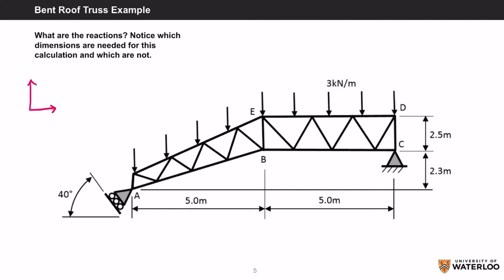We should start by drawing our coordinate system and then draw the reaction forces at each point. Remember that a roller support resists translation in the y direction and the pin support resists translation in the x and y direction.